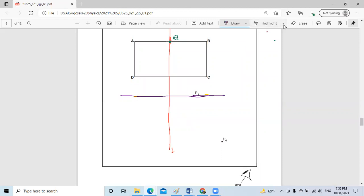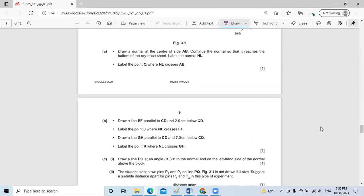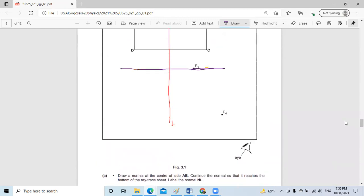By ruler, of course. Then what they ask: label the point J where it crosses the line AF. So this is the line EF, and here is the point where I will call it J.